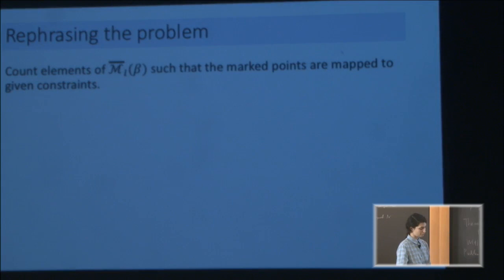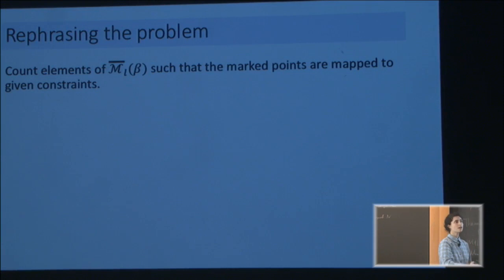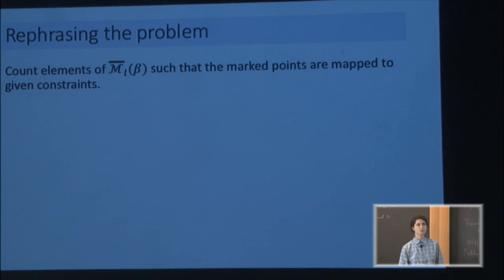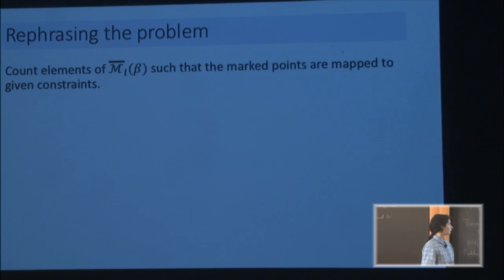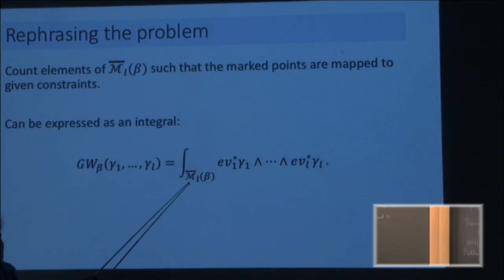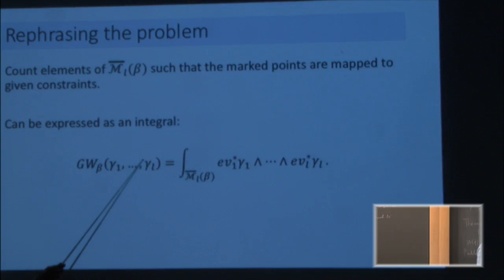This moduli space is nice because it allows me to rephrase a question. Instead of talking about counting maps, I can talk about counting elements in this moduli space that satisfy a property: those marked points we had before are now required to map into the constraints. So instead of talking about maps whose image intersects something, I'm talking about elements in the moduli space such that the marked points are mapped into those things that I wanted to intersect before. That allows me to write an integral.